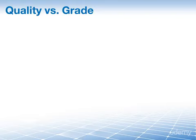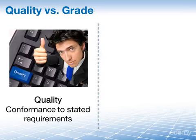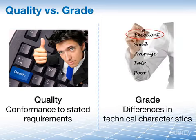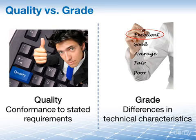Another concept you will encounter on the PMP exam is quality versus grade. Quality refers to how well a product conforms to requirements — for example, a low-grade cell phone with limited features can still be high quality if it has no defects. Grade, on the other hand, is a category assigned to products with similar functional uses but different technical characteristics. A high-grade cell phone with multiple features could be low quality if it has many defects. The project manager must accommodate trade-offs between required levels of both quality and grade.